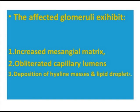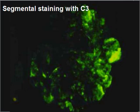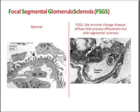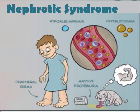On microscopy, the affected glomeruli exhibit increased mesangial matrix, obliterated capillary lumens, and deposition of hyaline masses and lipid droplets. Here is the histological view of segmental sclerosis and segmental staining with C3 complement. This is the electron microscopic view showing injury to the foot processes.